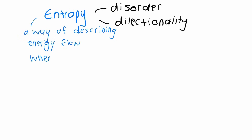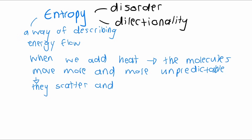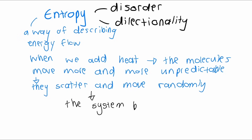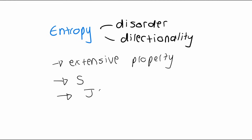By observing molecules, we learn that when we add energy to them, they move more and more unpredictably — they scatter and move randomly. The system that contains these molecules becomes chaotic. Thus, entropy is also a way of describing the chaos within a system. Entropy is an extensive property, denoted with the letter S, and has units of Joules per Kelvin.